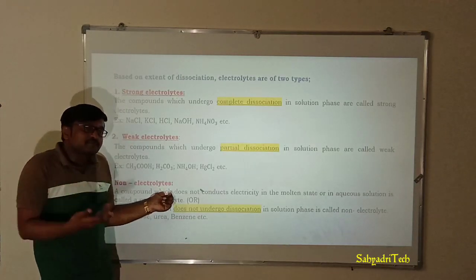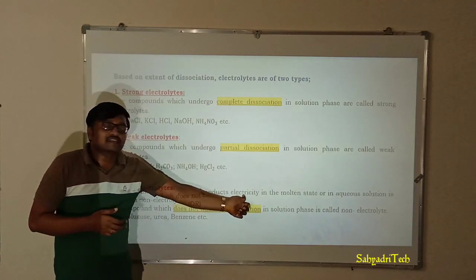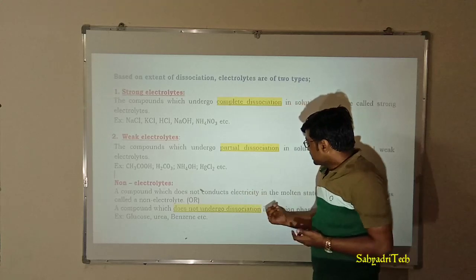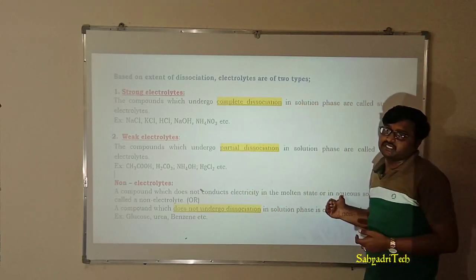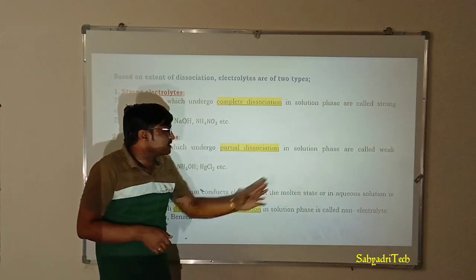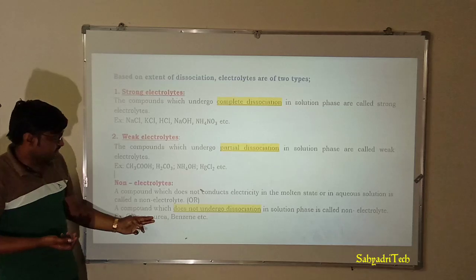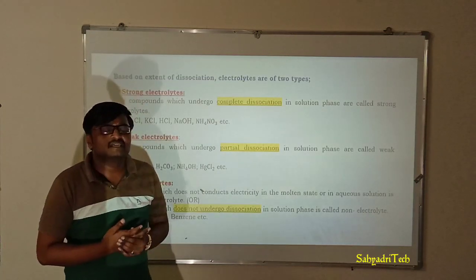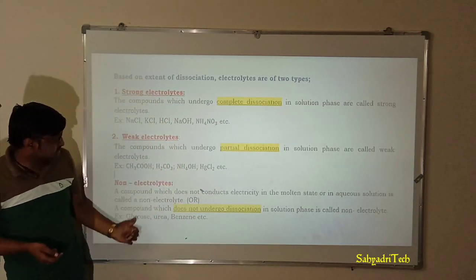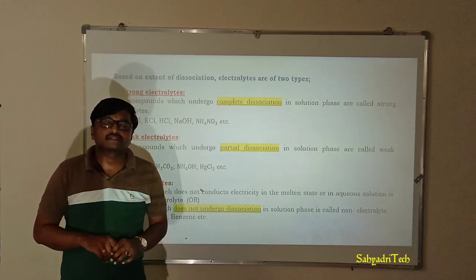Based on this concept, non-electrolytes can also be defined another way: the compounds which do not conduct electricity either in molten state or in aqueous solution are called non-electrolytes. Alternatively, the compounds which do not undergo dissociation in solution phase are called non-electrolytes. So there are two definitions for non-electrolytes, and either can be used.